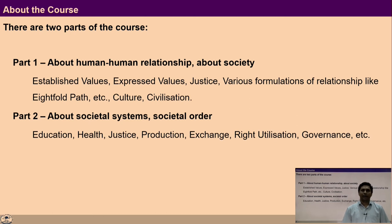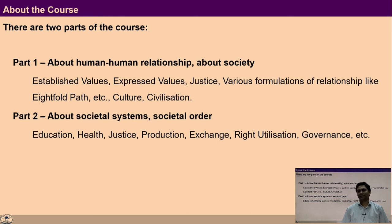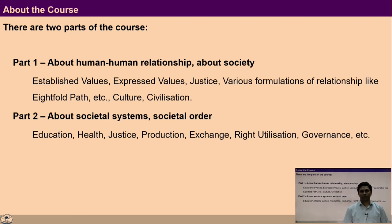In part two we will discuss about various dimensions that are required to ensure social order. For example, the dimension of education, dimension of health, dimension of justice, production, etc.